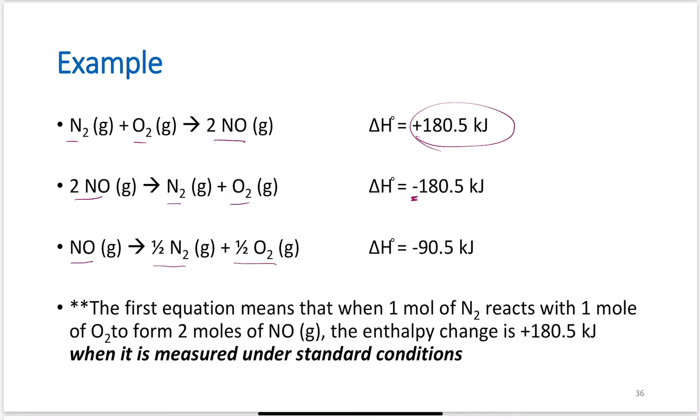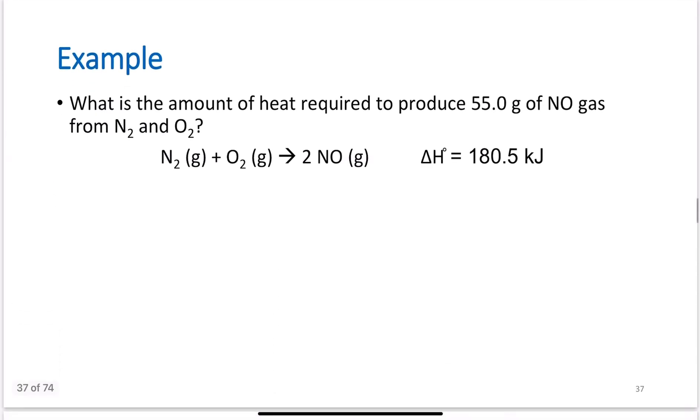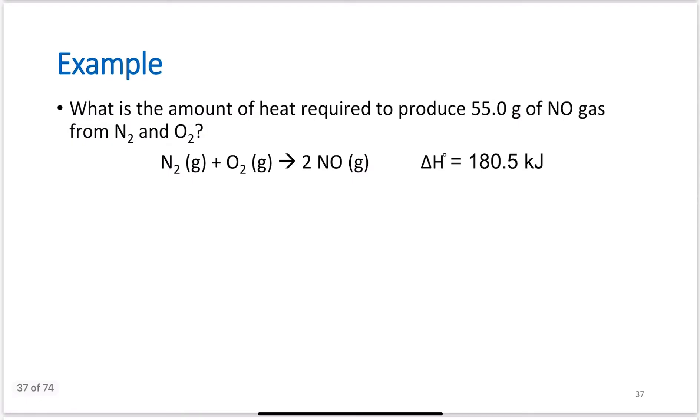So, this reaction, I write this as flipped. This arrow means flipped. This means it was multiplied through one-half or divided by two, and we see the value for delta H has been divided by two. Again, the first equation means that when one mole of N2 reacts with one mole of O2 to form two moles of NO, the enthalpy change is positive 180.5 kilojoules when measured under standard conditions. We have other equations we can use to get to things when they're not under standard conditions.